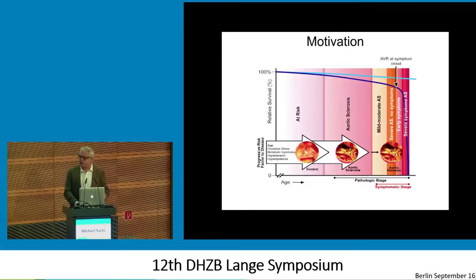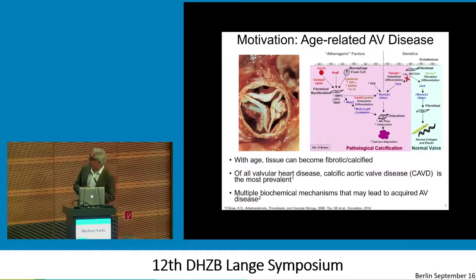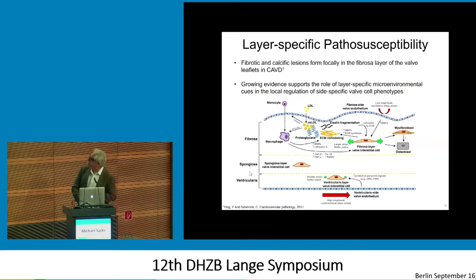This is an extremely complex process. I don't claim to understand all the underlying biochemistry — much of it is dictated by cell signaling and so on. But there are many biochemical mechanisms that are also triggered by the very unique physical environment of the valve. In particular, there are multiple layers, and there's actually thought to be a layer-specific susceptibility to the valve, depending on what side, what location, and so on. So as you probe deeper and deeper, and you peel away the layers of the onion, you'll find it gets much more interesting.